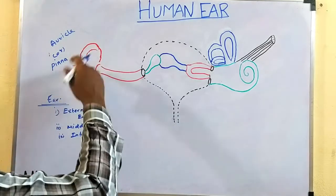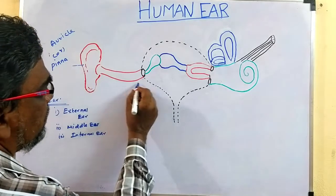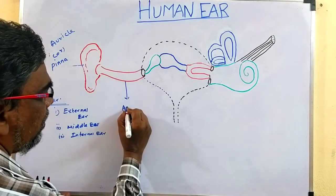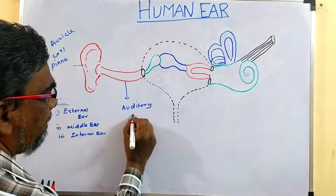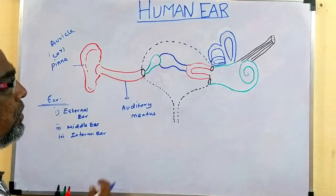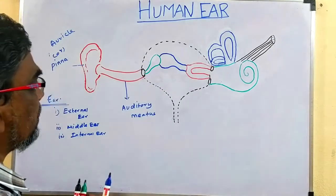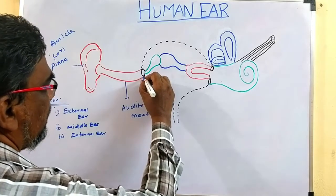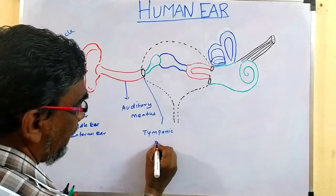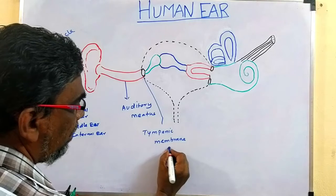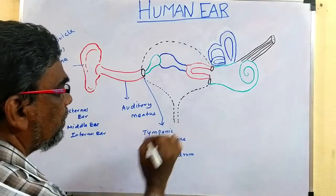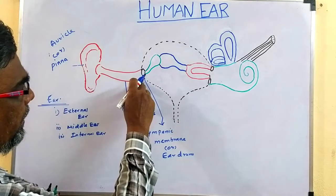Pinna comes under the external ear. From pinna, there is a canal — a tube — called auditory meatus. This is a small canal. Next to the auditory meatus, there is one more structure.